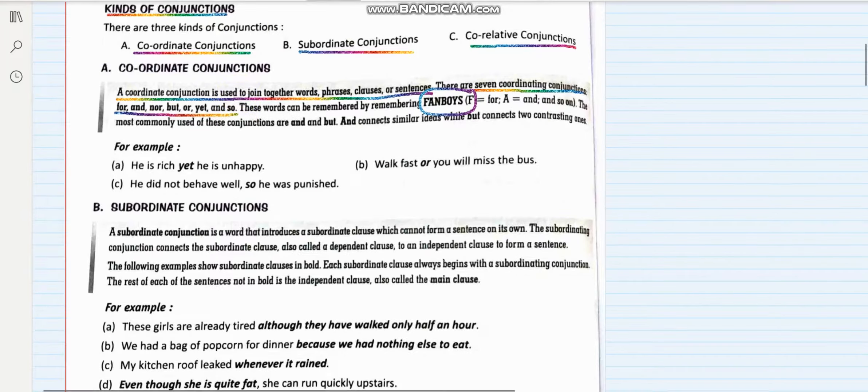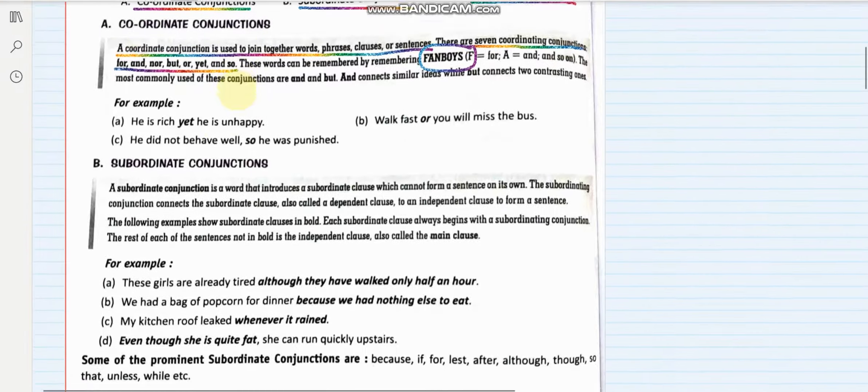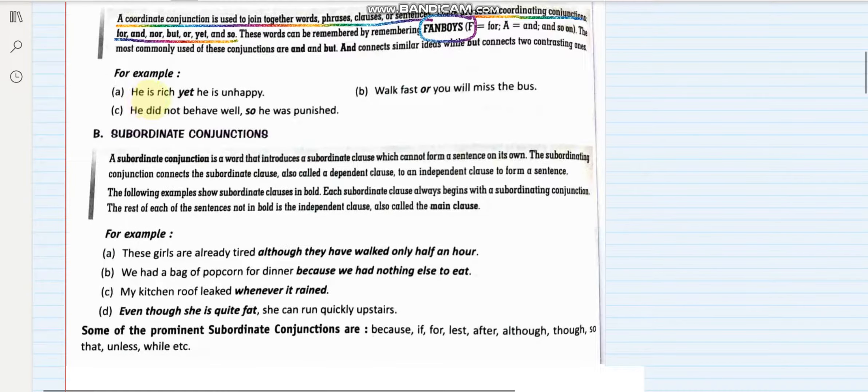Now let us take up an example here. He is rich, yet he is unhappy. Walk fast or you will miss the bus. He did not behave well, so he was punished. I hope this is clear to you.